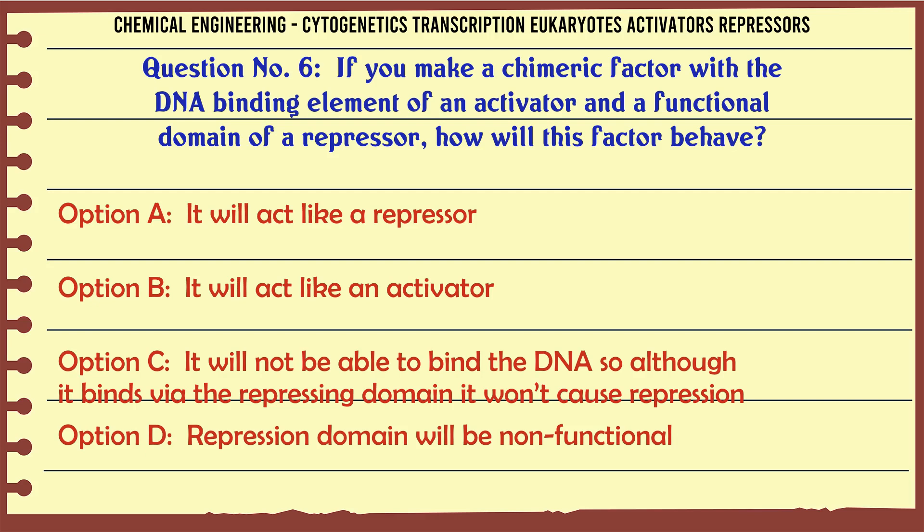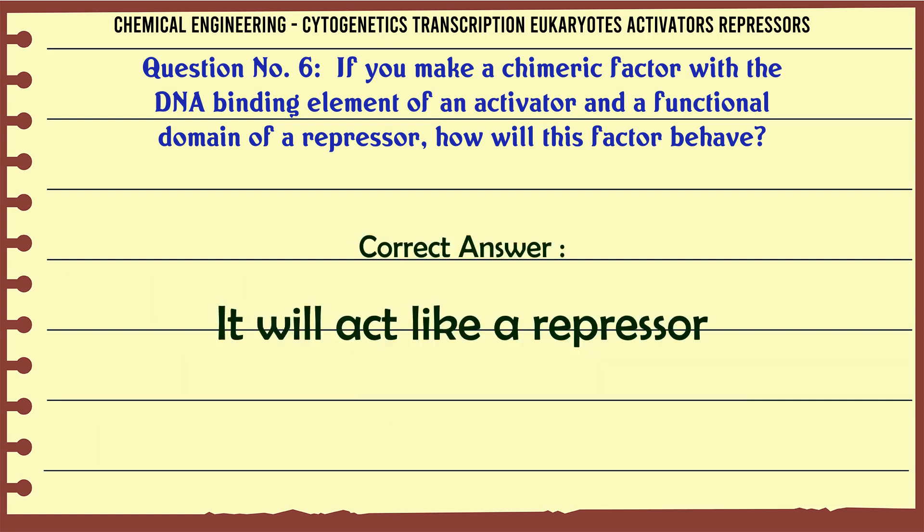If you make a chimeric factor with the DNA binding element of an activator and a functional domain of a repressor, how will this factor behave? A. It will act like a repressor. B. It will act like an activator. C. It will not be able to bind the DNA, so although it binds via the repressing domain it won't cause repression. D. Repression domain will be non-functional. The correct answer is: It will act like a repressor.